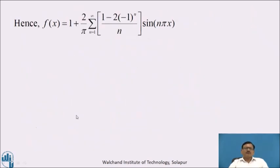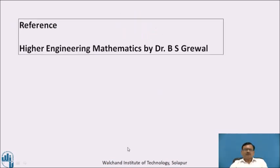Substituting the values of a₀, aₙ, and bₙ, we get f(x) = 1 + (2/π) · summation n=1 to infinity of [(1 - 2(-1)ⁿ)/n] · sin(nπx). Reference: Higher Engineering Mathematics by Dr. B.S. Grewal. Thank you.